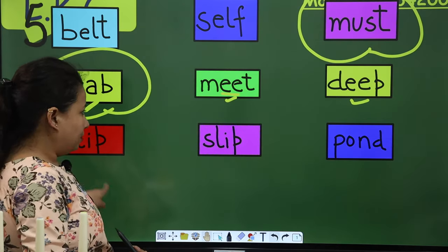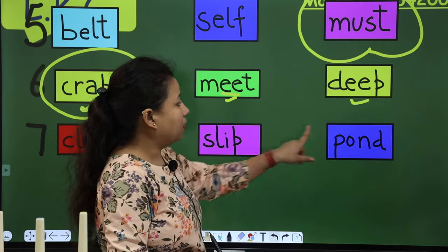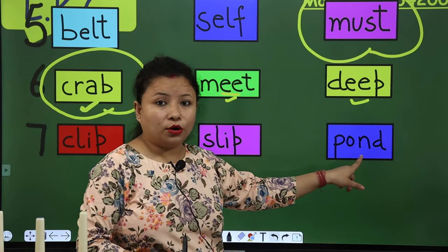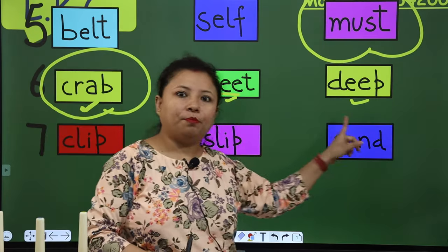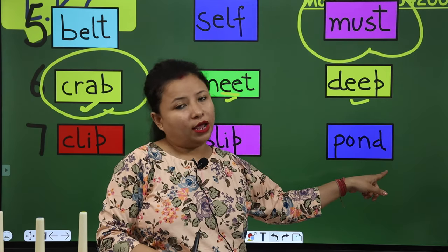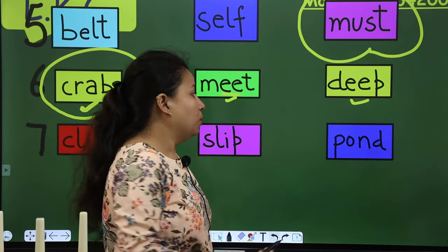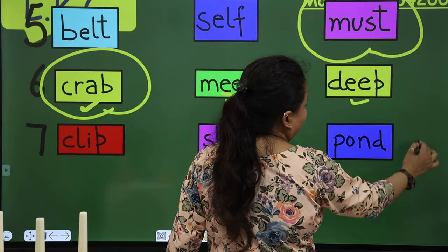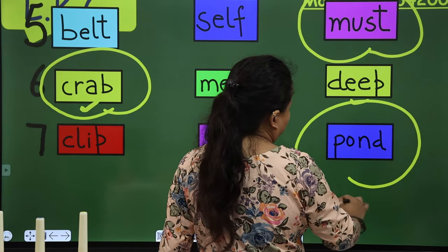So next is clip and slip. This is pond. Clip, slip, pond. All have same sounds? No. Pond has different sound. So we have to make a circle on it like this.